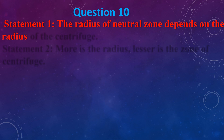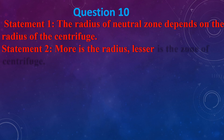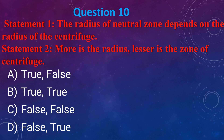Statement 1: The radius of the neutral zone depends on the radius of the centrifuge. Statement 2: More is the radius, lesser is the zone of the centrifuge. (a) True, False (b) True, True (c) False, False (d) False, True. The answer is (a) first statement is true, second statement is false.